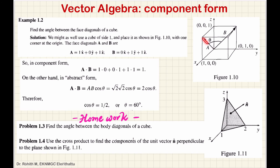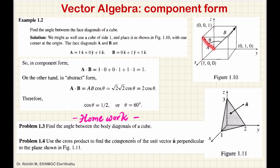So, vector A — using the component formula with projections — the x-coordinate is 1, y-coordinate is 0, z-coordinate is 1. And vector B has x-coordinate 1, y-coordinate 1, z-coordinate 0. So A is 1x-cap plus 0y-cap plus 1z-cap, and B is 1x-cap plus 1y-cap plus 0z-cap.